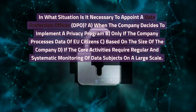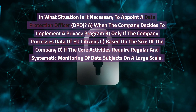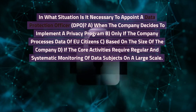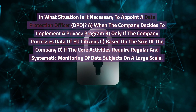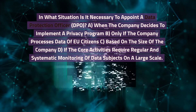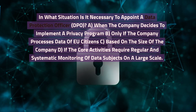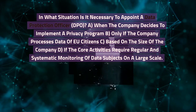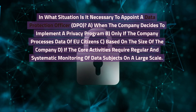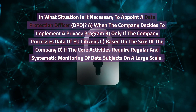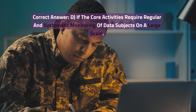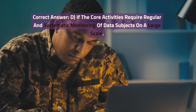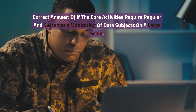In what situation is it necessary to appoint a data protection officer (DPO)? A. When the company decides to implement a privacy program. B. Only if the company processes data of EU citizens. C. Based on the size of the company. D. If the core activities require regular and systematic monitoring of data subjects on a large scale. Correct answer: D. If the core activities require regular and systematic monitoring of data subjects on a large scale.